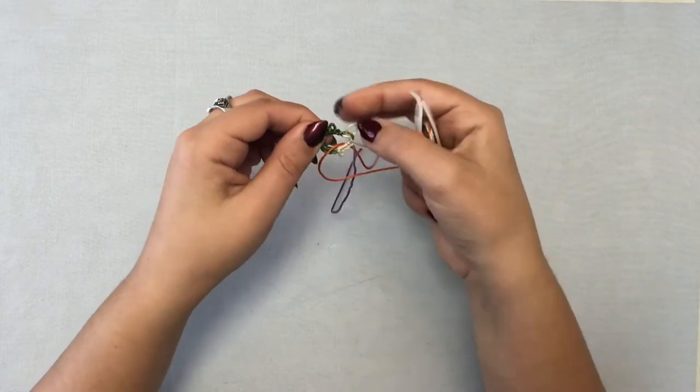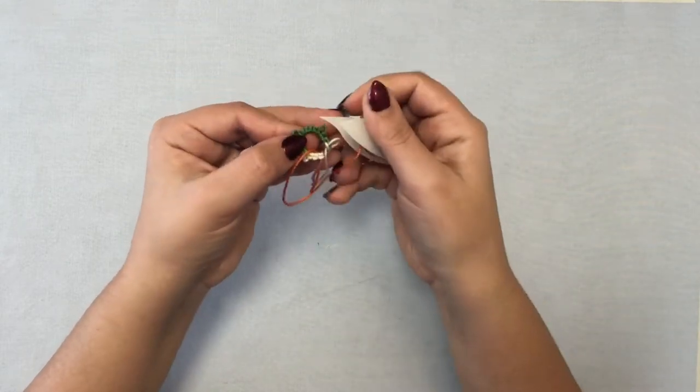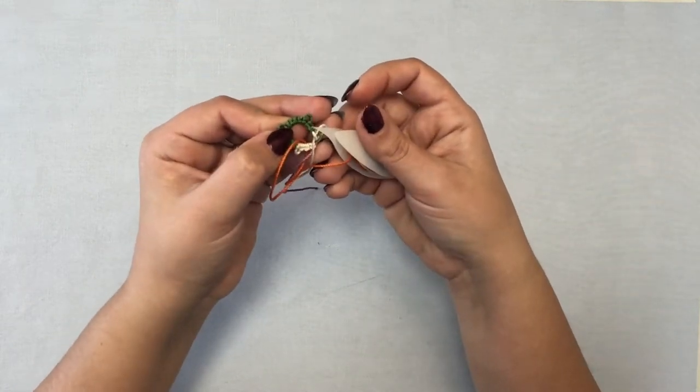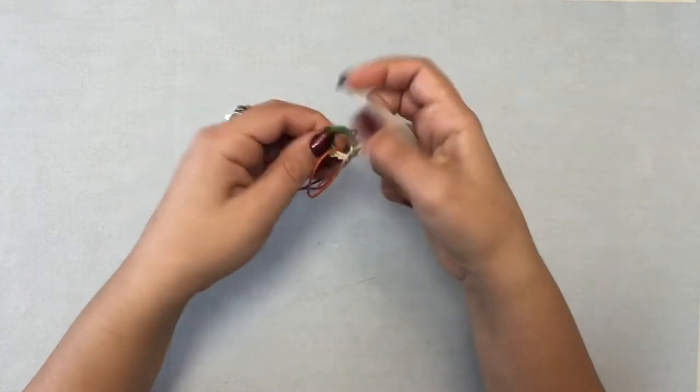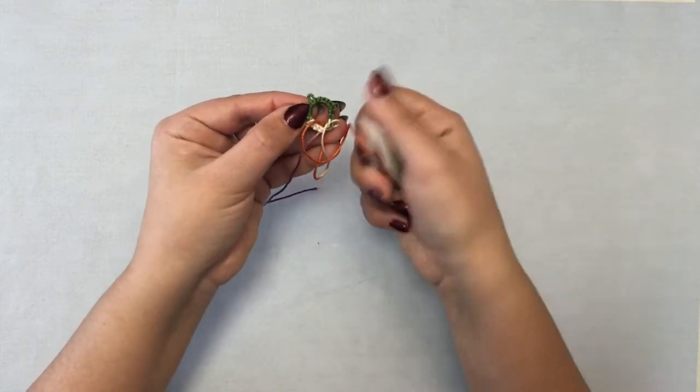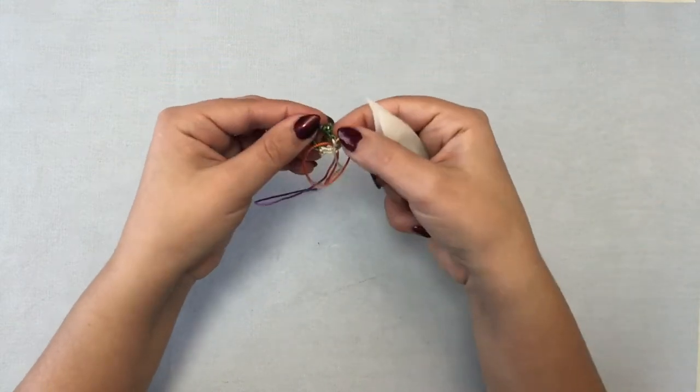And I'm going to go to my very last picot whatever is closest this is easier if you have a picot that's only a couple of stitches away from the end of your ring. If you were going to try to use this one up here it would still work it would just be a little more difficult.